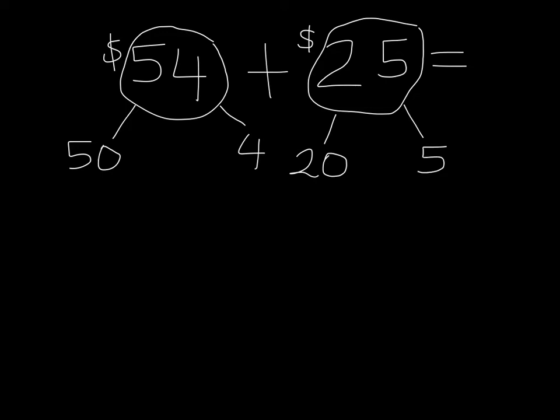Now I'm going to add the tens. 50 plus 20. I know that 5 plus 2 is 7, so 50 plus 20 would be 70.